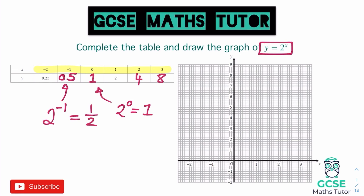Just like with normal coordinate geometry and drawing other graphs, we just need to plot these points. Carefully: negative 2 gives 0.25, negative 1 gives 0.5, 0 gives 1, 1 gives 2, 2 gives 4, and 3 goes up to 8. When it comes to an exponential graph, we draw a nice smooth curve — just like we do for quadratics or cubics — not with a ruler. And there is our exponential graph.